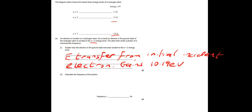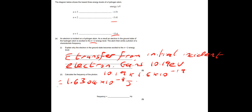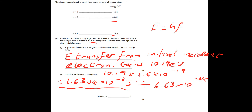Now calculate the frequency of the photon. We need the energy: 10.19 eV × 1.6 × 10⁻¹⁹ = 1.6304 × 10⁻¹⁸ J. Then using E = hf, the frequency = E/h = 1.6304 × 10⁻¹⁸ ÷ 6.63 × 10⁻³⁴, which gives a frequency of 2.46 × 10¹⁵ Hz.